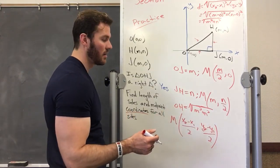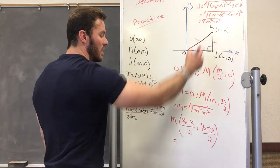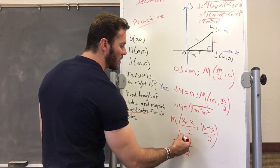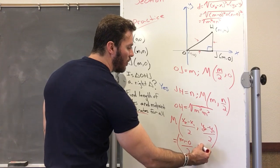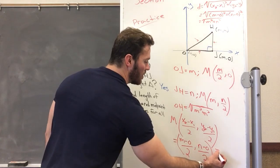So x2 is M minus x1, which is 0, over 2. Y2 is N minus y1, which is 0, over 2. And that equals...